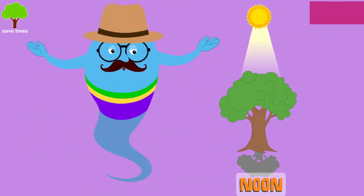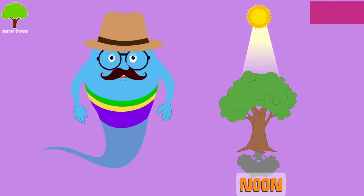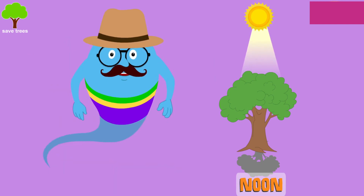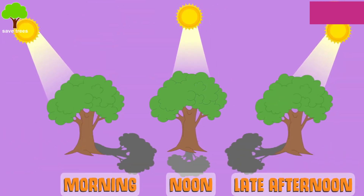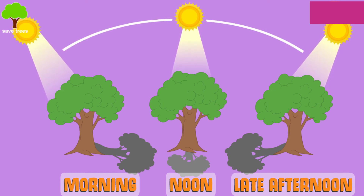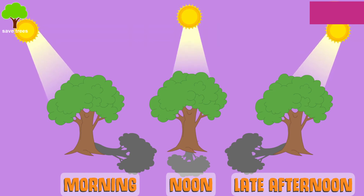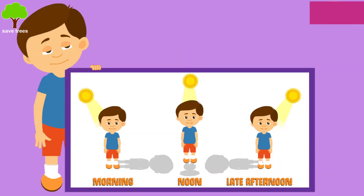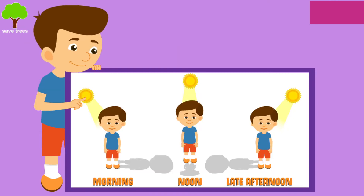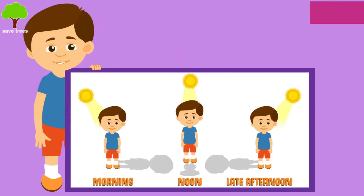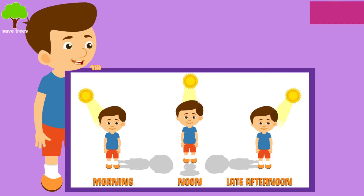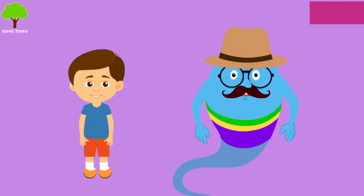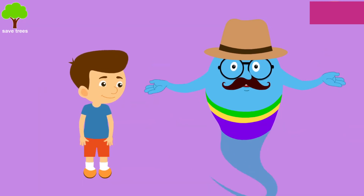At noon, when the sun is directly overhead, shadow is tiny or there's no shadow. The position of the sun changes throughout the day, which changes the angle at which the sun's rays fall on the ground. This is why you see different sizes and shapes of shadows. In the morning your shadow will be long, at noon it was small, and in the late afternoon it's long again. Now you know a lot about light and shadow.